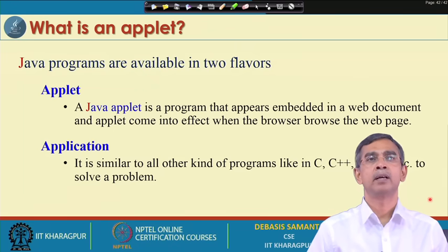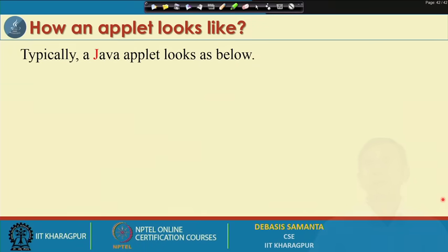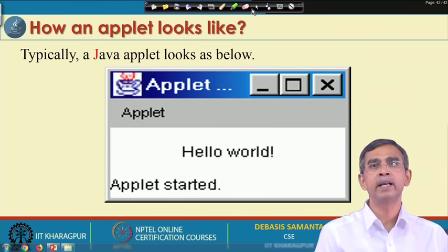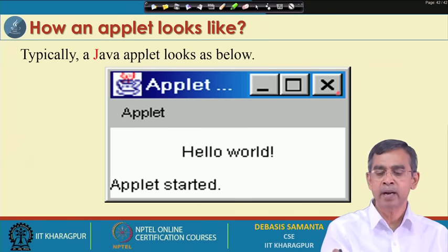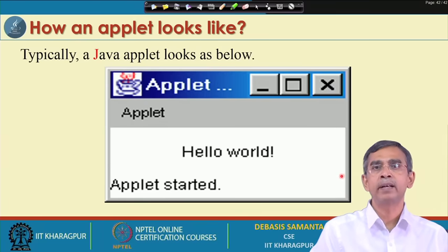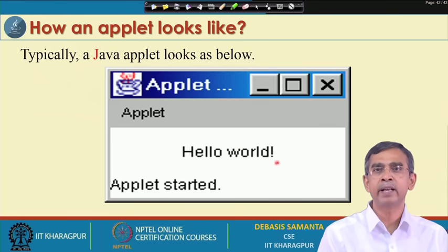A Java Applet is basically a small program in Java, and more specifically these are small programs for writing graphical user interface related programs. An Applet is basically a view — it shows how we can create a view using Java. A typical Java Applet looks like a window, with a title bar, a name, and a display area.